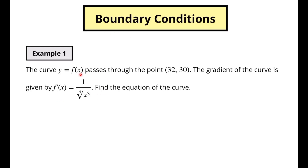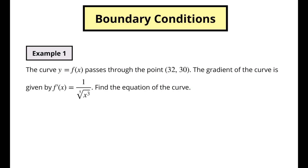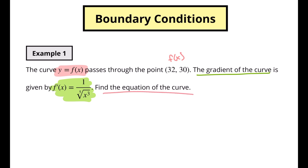Boundary conditions are simply when we've got some function that we're going to integrate and we've got some other piece of information about it. By using this other piece of information, we can substitute it into the original function and then we can find what the actual C value is. We've got the curve passing through y equals f of x and it's passing through the point (32, 30). The gradient of the curve is given by this function here.